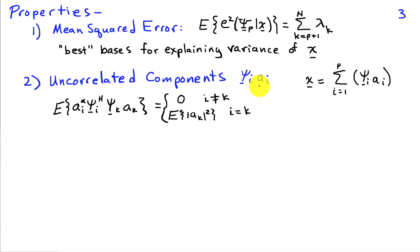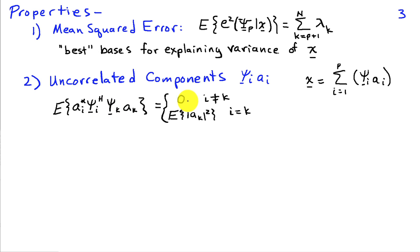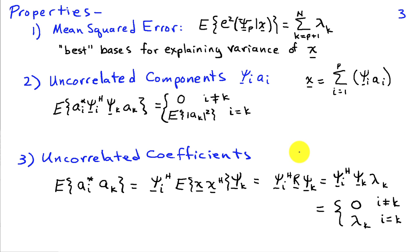Furthermore, the individual principal components psi_i times a_i are uncorrelated. The expected value of (a_i* psi_i*^T)(psi_k a_k) is exactly 0 when i ≠ k, and equals the expected value of |a_k|² when i = k. This follows from the orthogonality of the basis vectors: their inner product is 0 when i ≠ k and 1 when i = k. Thirdly, the individual coefficients a_i associated with the principal components are also uncorrelated.